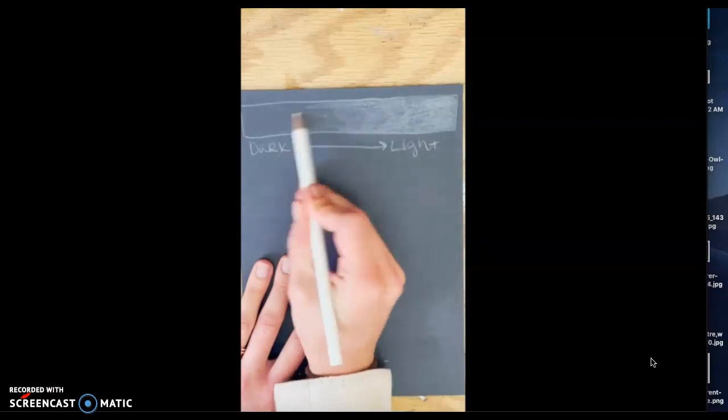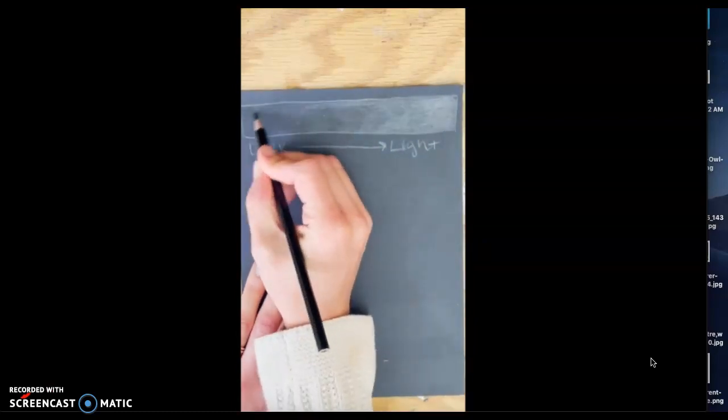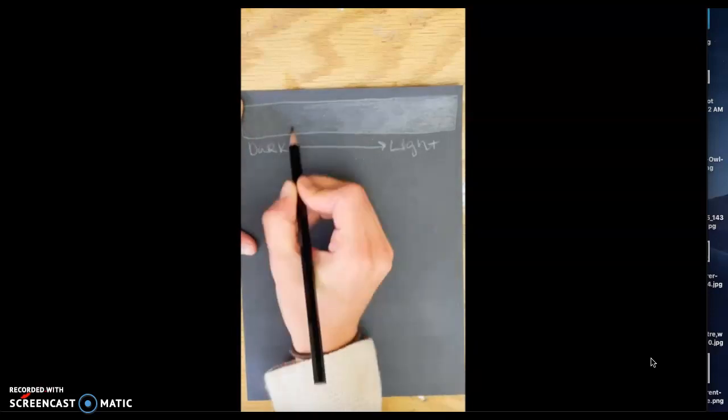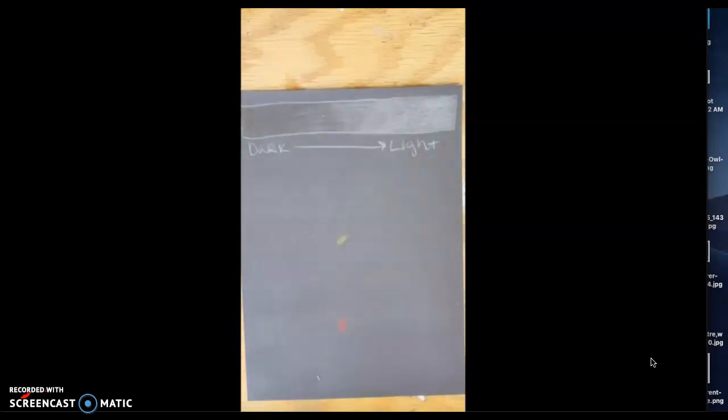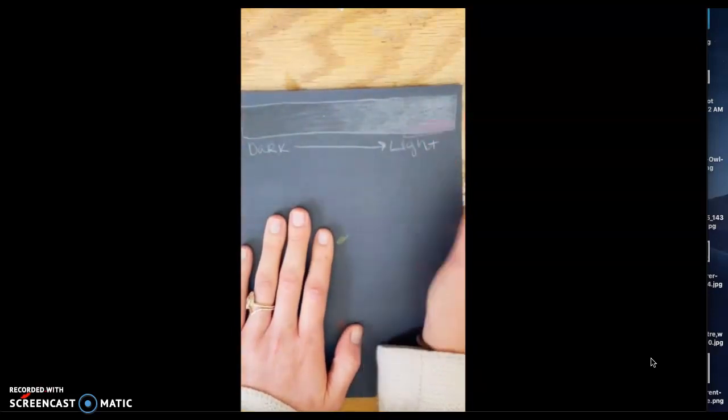As I'm shading with the colored pencils here, you'll notice that I'm using circles versus shading back and forth. Try to use circles. It's going to help a lot more as you're blending.